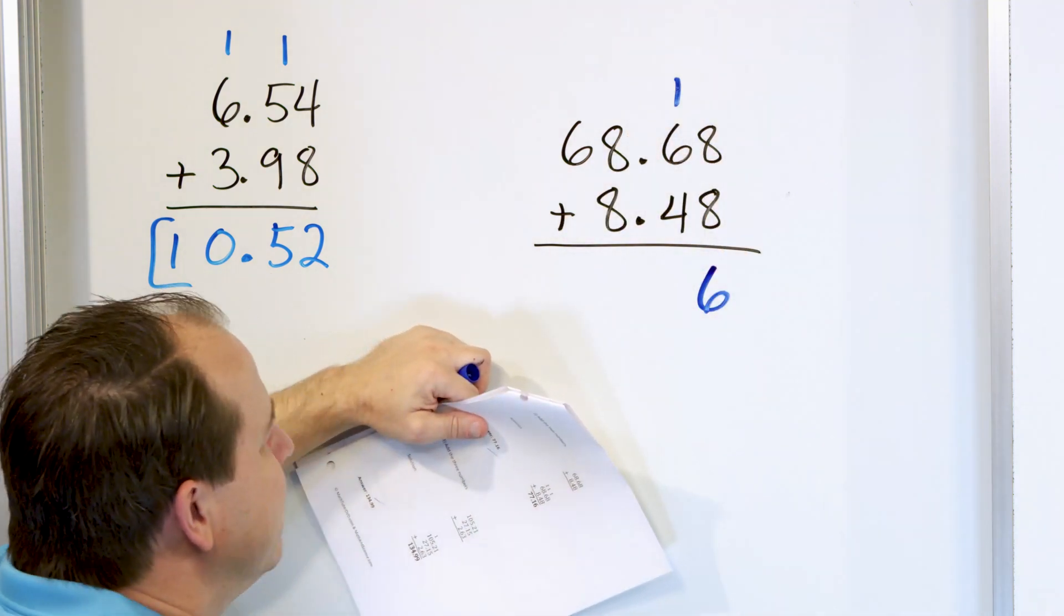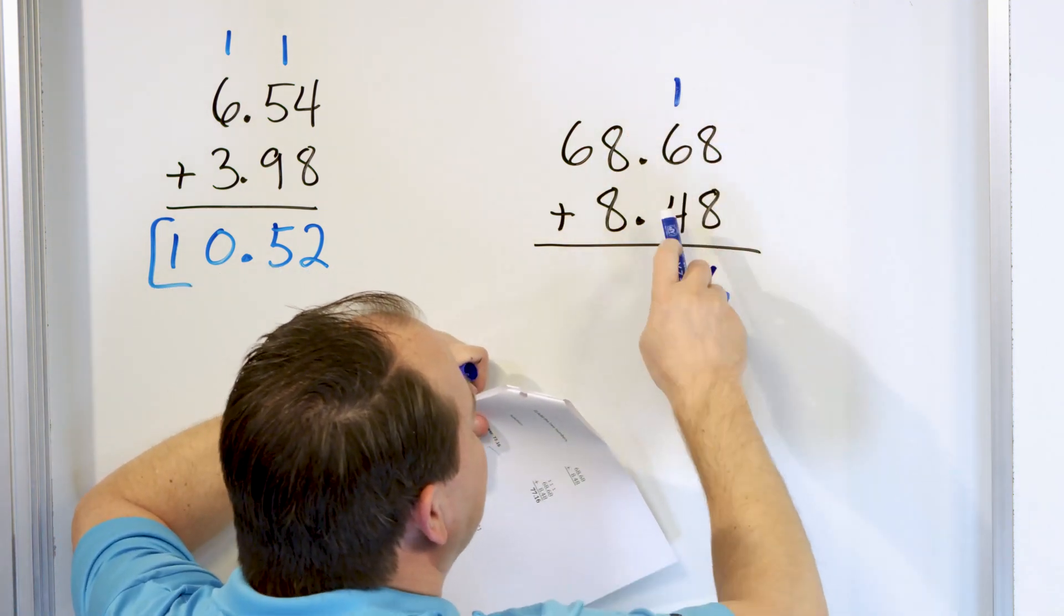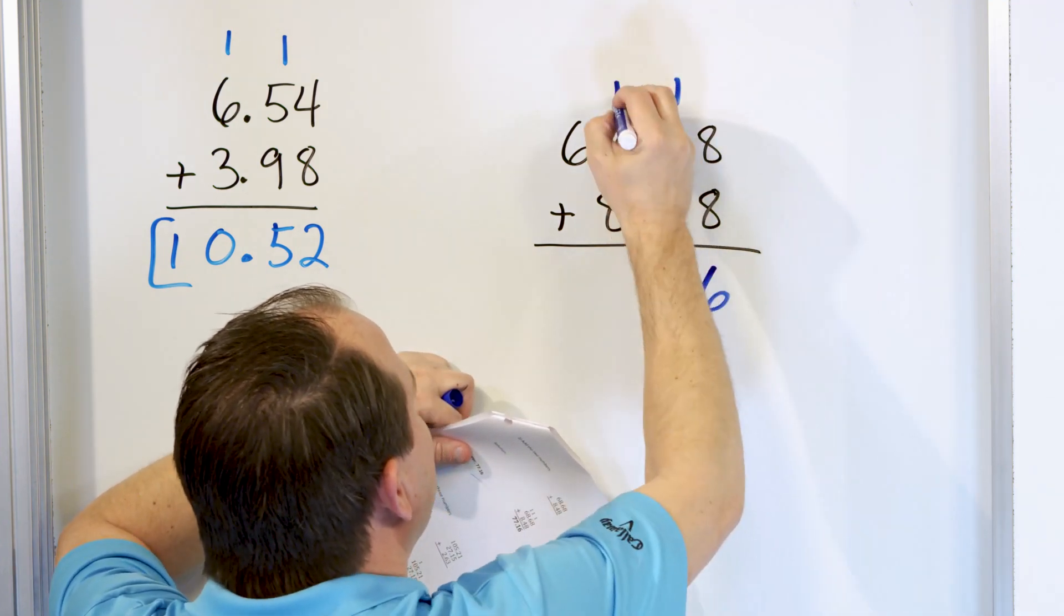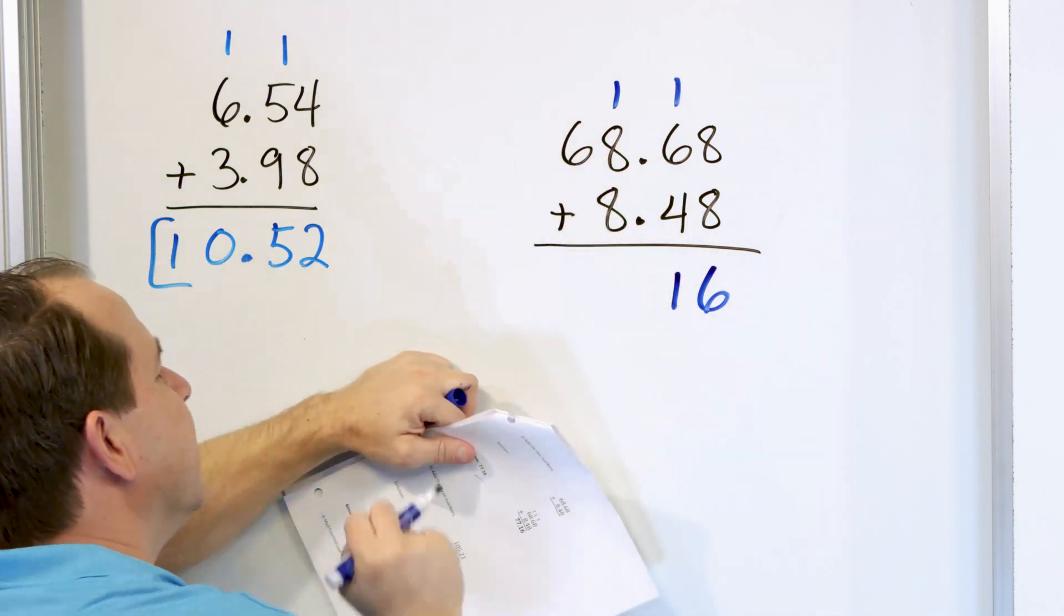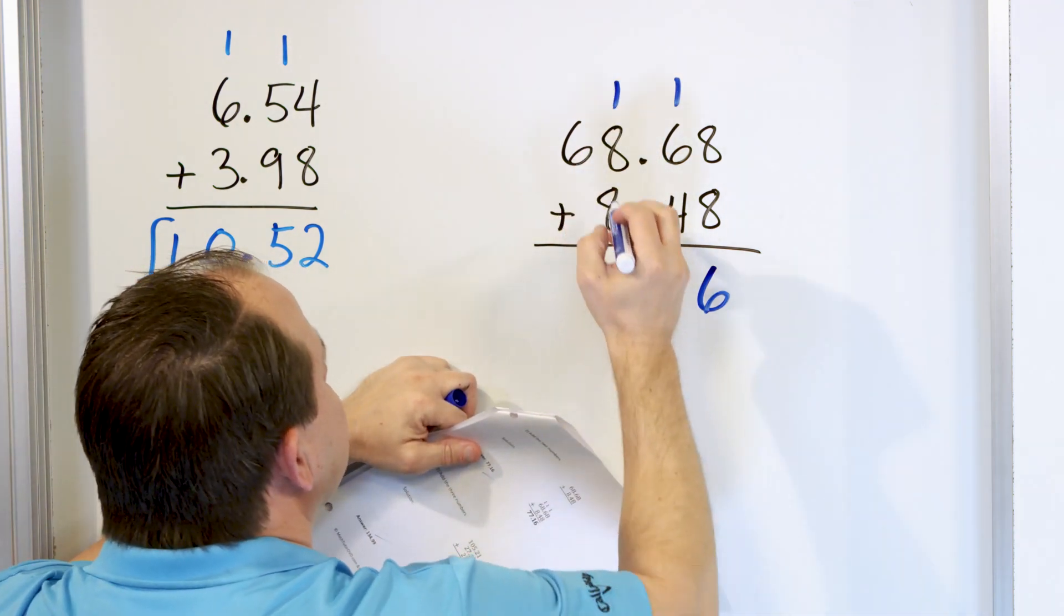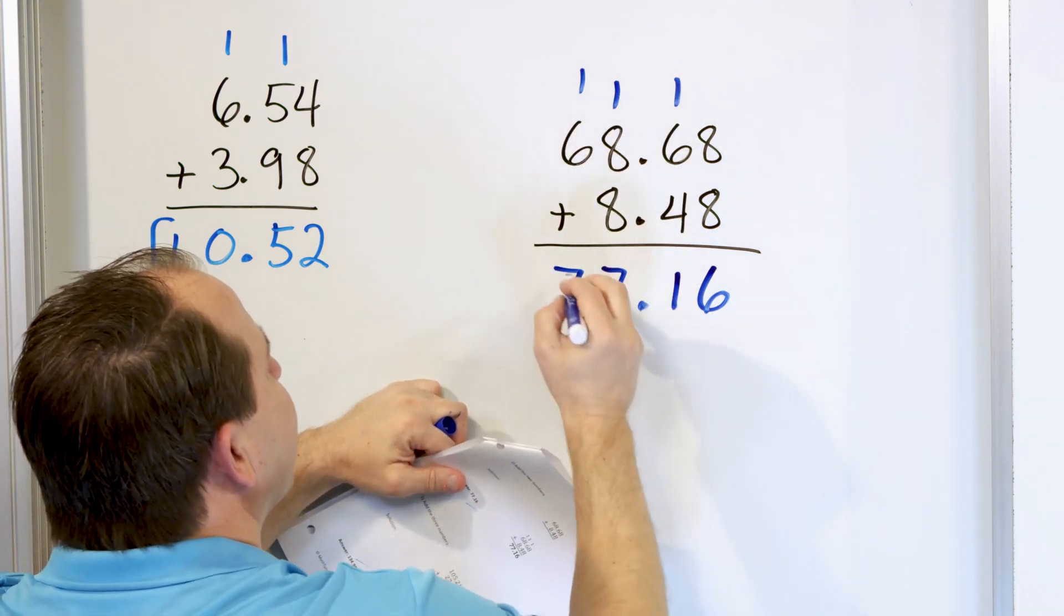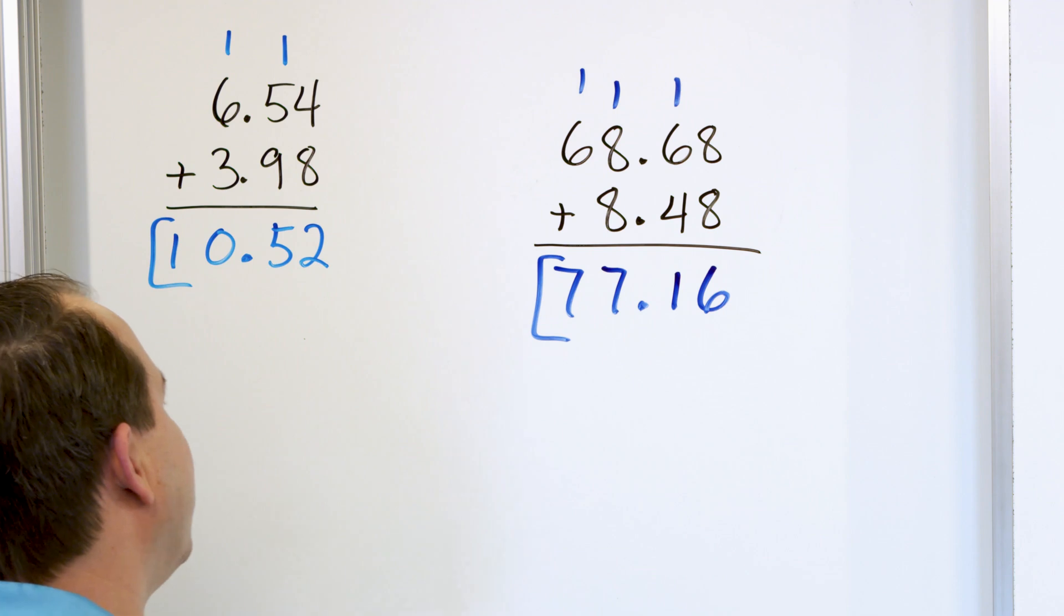Now, 6 and 4, we know make 10. That's a complement. If you forget, just count up, 7, 8, 9, 10. Then one more is 11, means we carry a 1. Again, we have 8 plus 8. We know that's 16. One more, 17. We carry the 1. 6 plus 1 is 7. The decimal just falls right out of the problem for 77.16.